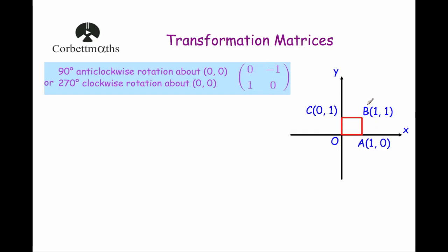So here we've got the unit square and I'm going to multiply each of these points by the transformation matrix to show you that this transformation matrix is the 90 degrees anti-clockwise rotation about the origin — in other words, bringing this unit square from here into this quadrant. So let's have a look and see.